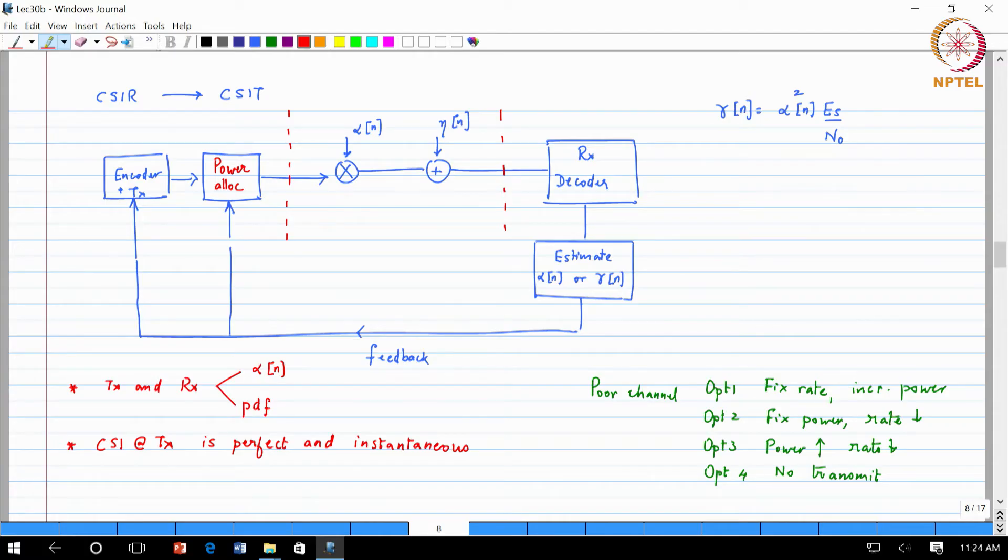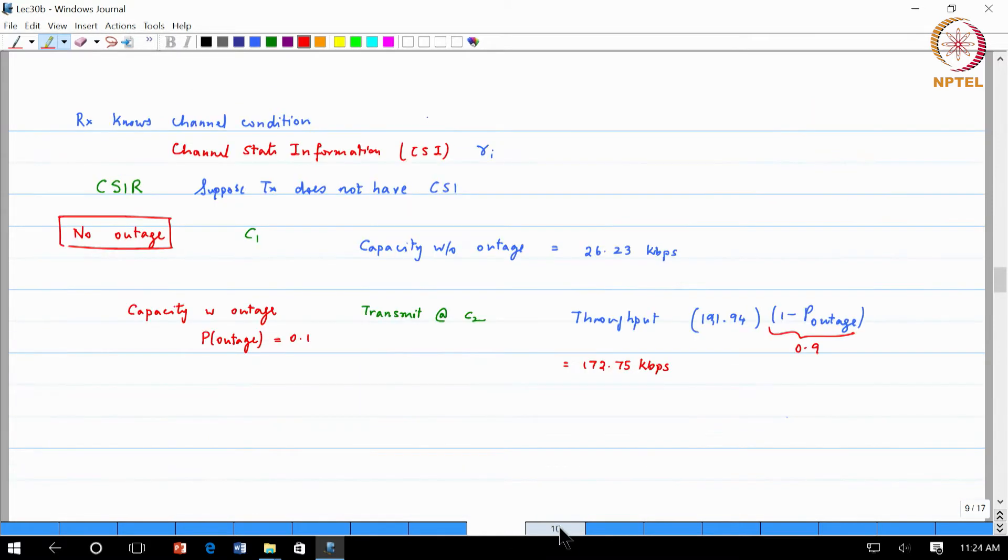Basically you feed this information back to the transmitter and then the transmitter calculates which of the schemes that we can transmit and then we can transmit. Now given that I have CSIT scenario how do I achieve capacity?